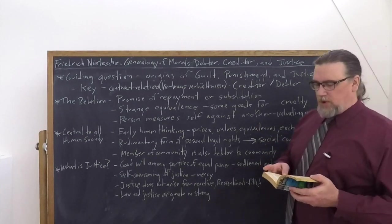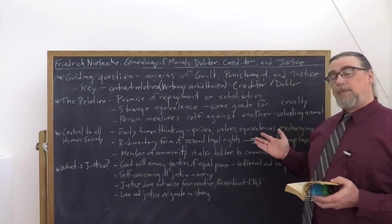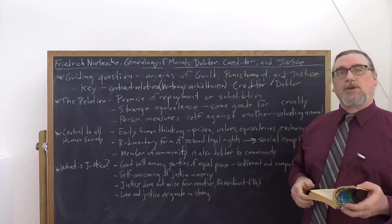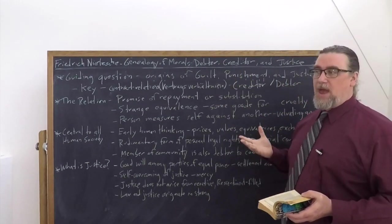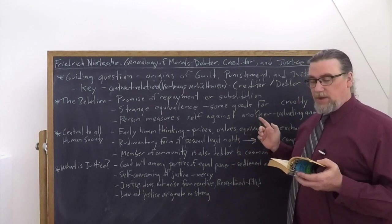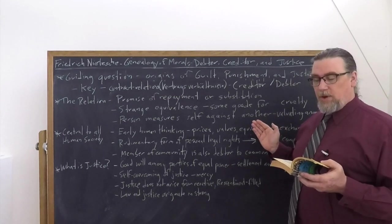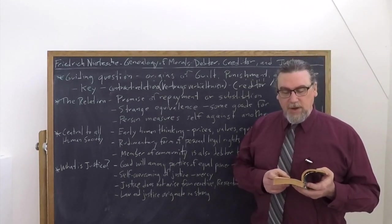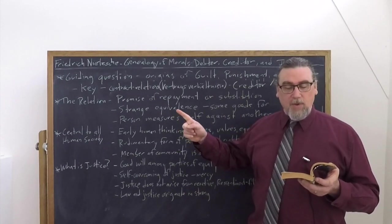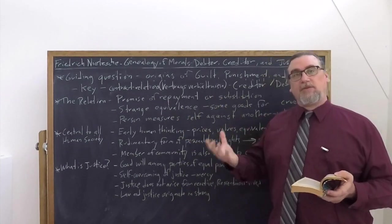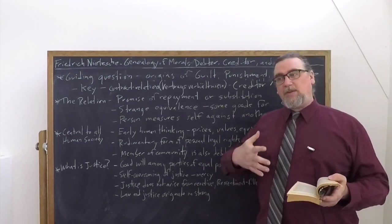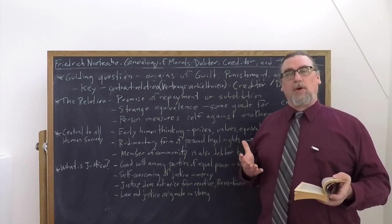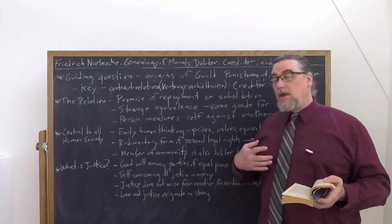Here we're actually going to get to the discussion of justice. So we've got a very interesting phenomenon here. There's one other thing to point out before we talk about justice as such. So in chapter nine and chapter 10, he talks about the member of the community being a debtor, not only to other members of the community, but to the community itself. A notion that we find spread throughout humanity. And why was that? Well, he says that one lives in a community. One enjoys the advantages of a communality. One dwells protected, cared for, and peaced in trustfulness without fear of certain injuries and hostile acts to which the man outside, the man without peace, is exposed.